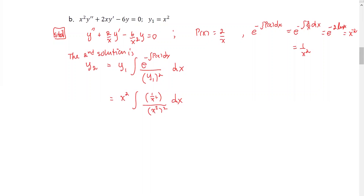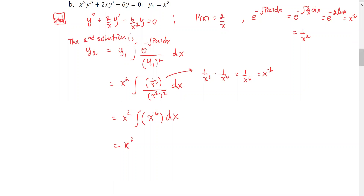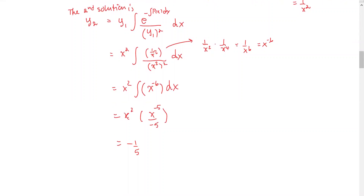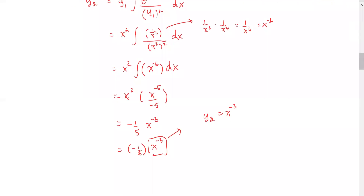Simplifying the integrand gives x^(−6). The antiderivative of x^(−6) is x^(−5)/(−5). Ignoring the constant of integration, we have −(1/5)x^(−3). Since −1/5 is a constant multiple, we disregard it. Therefore, the second solution is y2 = x^(−3), and y1 = x² and y2 = x^(−3) form a fundamental set of solutions.